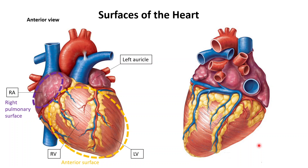So this is the inferior view of the heart. This part right here is the right ventricle, and this part right here is the left ventricle. Both ventricles are divided by this groove called the posterior interventricular groove.